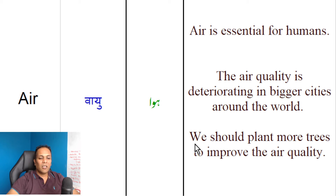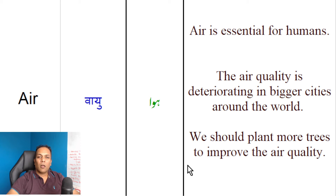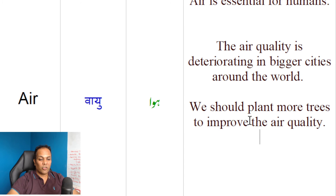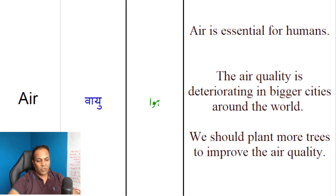Iske alaawa hum keh sakte hain: 'We should plant more trees to improve the air quality.' Humay hawa ki quality ko behtar banane ke liye zyadha darakht lagane chahiye. We should plant more trees to improve the air quality.